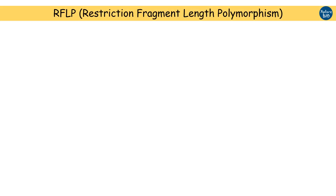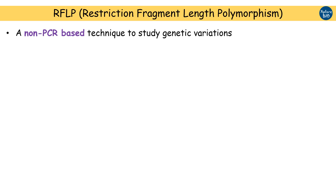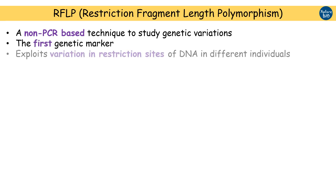RFLP, or Restriction Fragment Length Polymorphism, is a non-PCR based marker technique to study genetic variation in individuals. It is the first marker in the history of molecular markers and exploits variation in the restriction sites of DNA in different individuals.